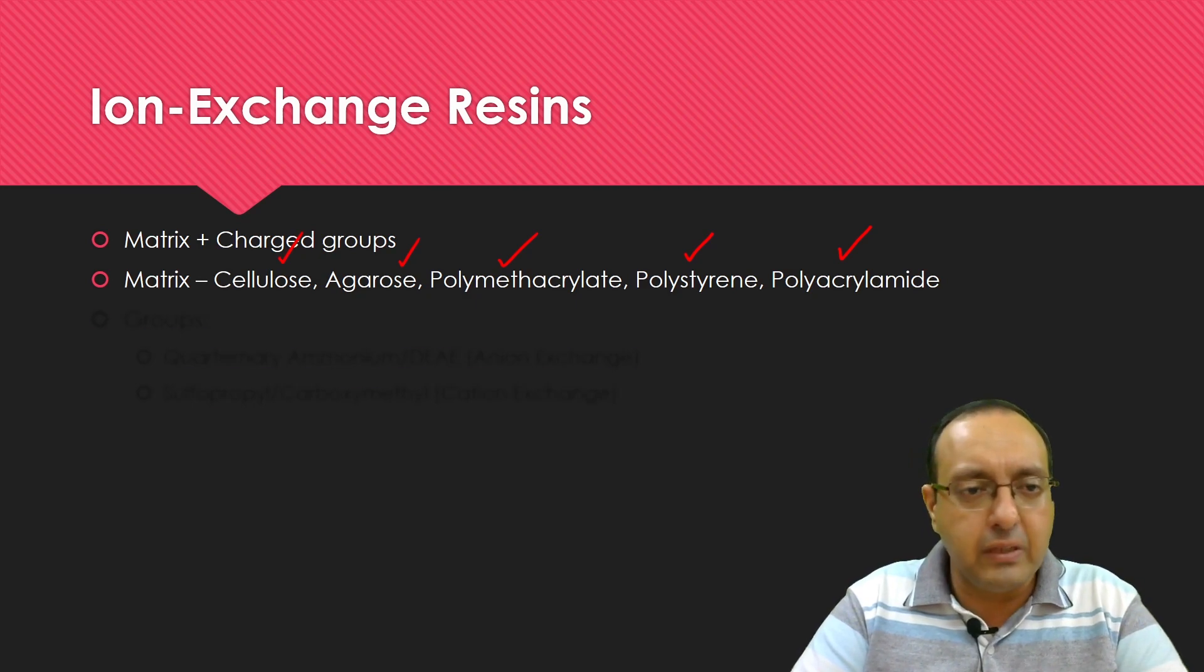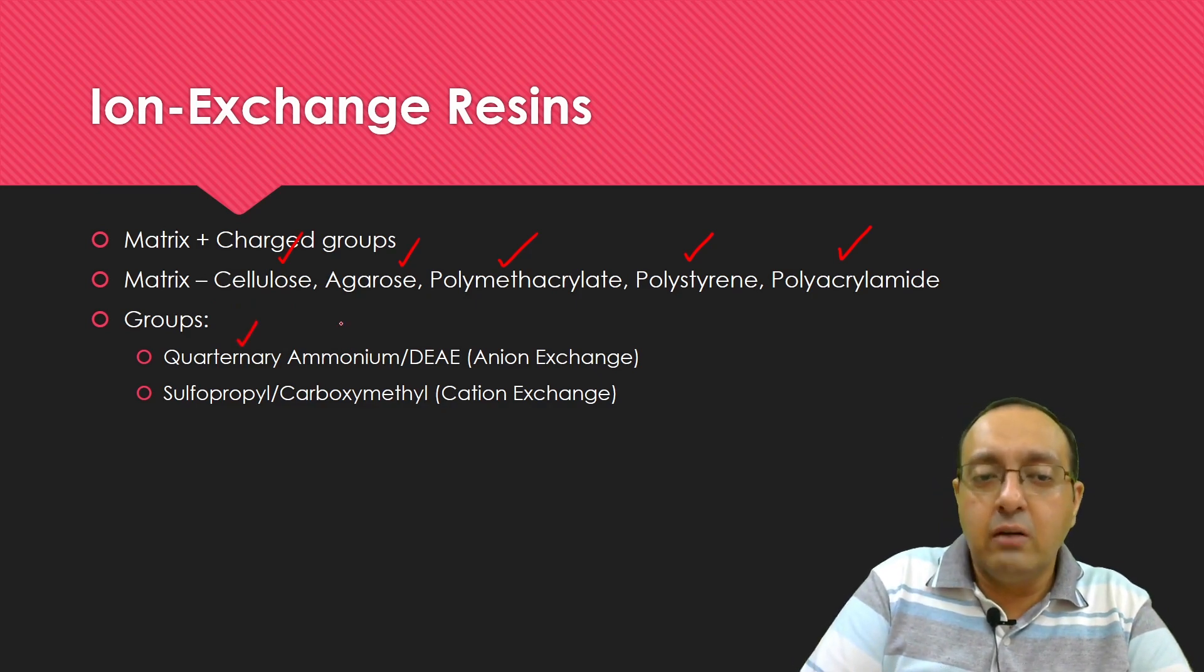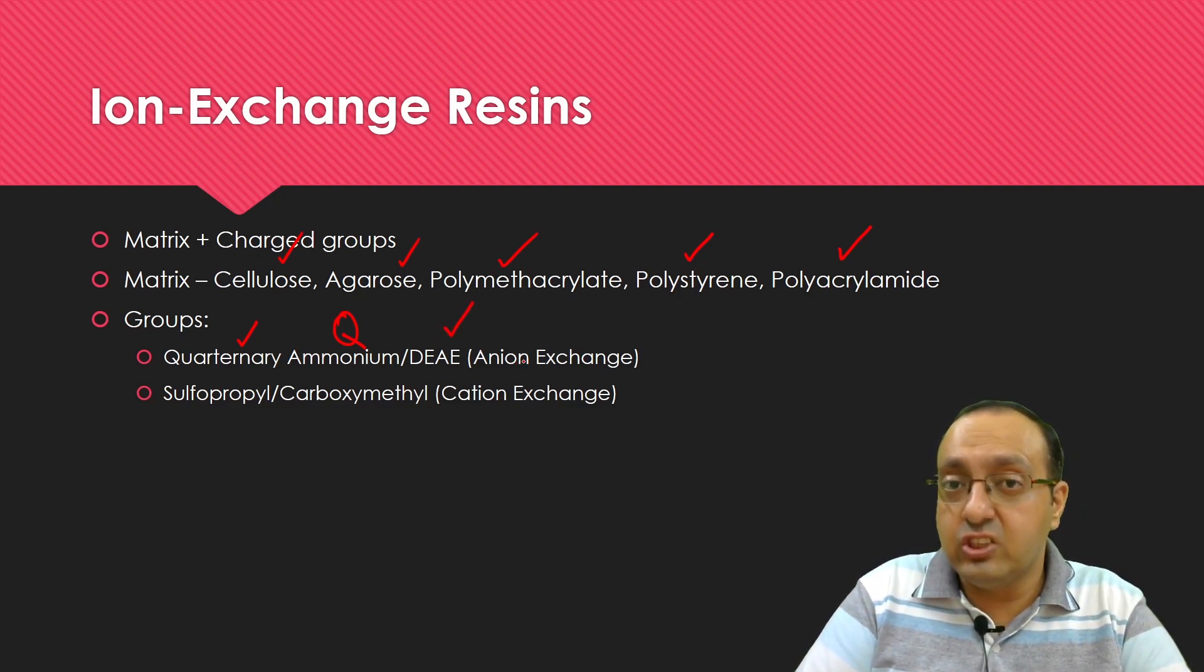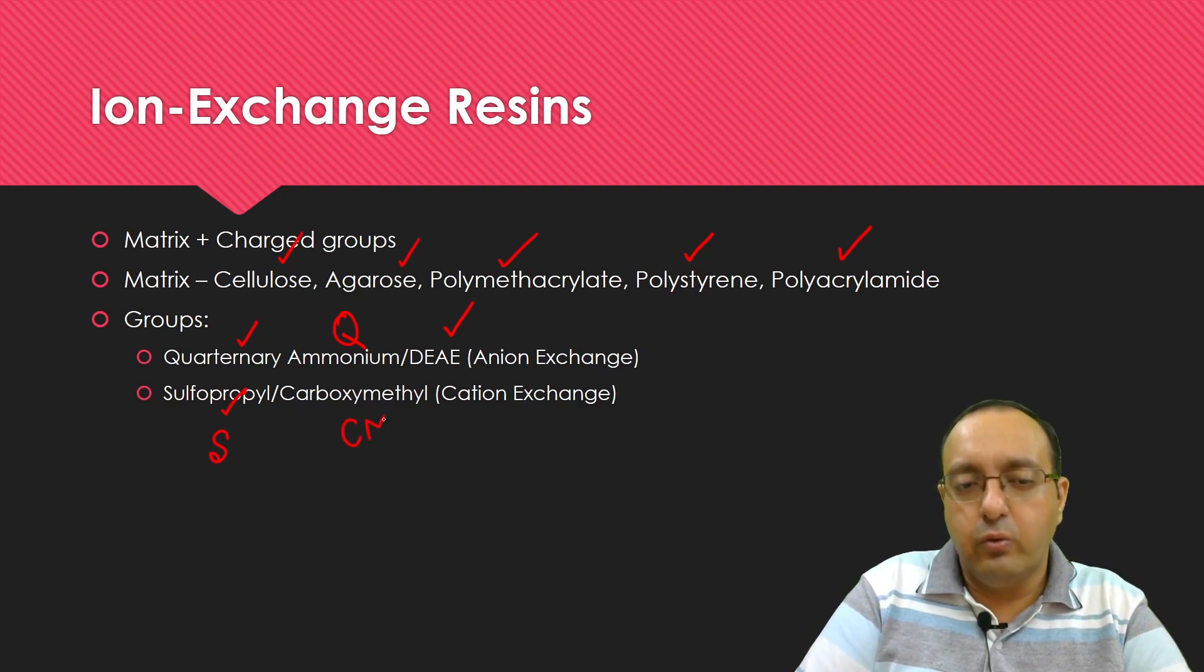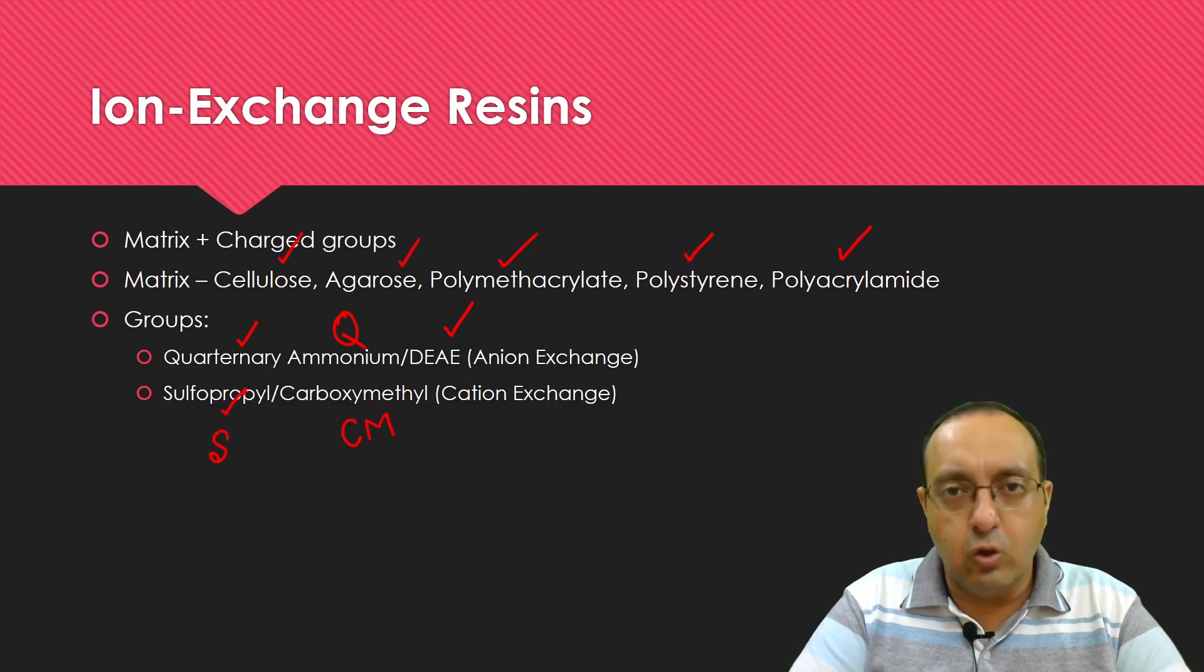Groups can be, for anion exchange, quaternary ammonium also referred to as Q in the literature, and diethyl aminoethyl, and that is DEAE. These are anion exchange groups. Sulfopropyl, also referred to just as S, and carboxymethyl, also referred to as M, these are cation exchange groups.